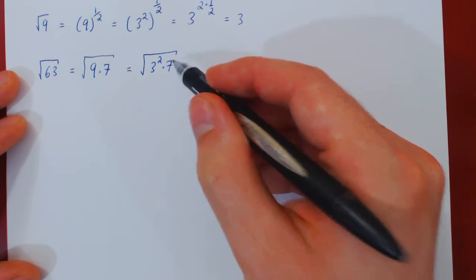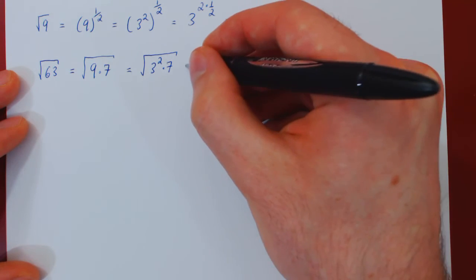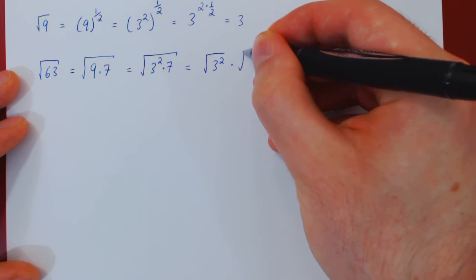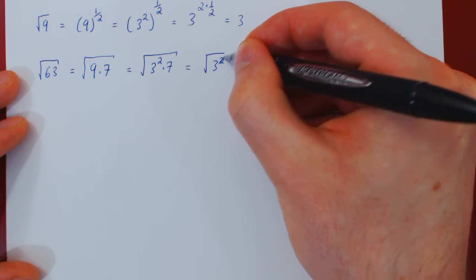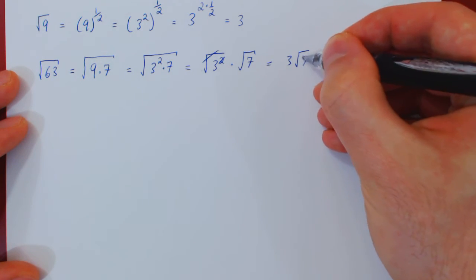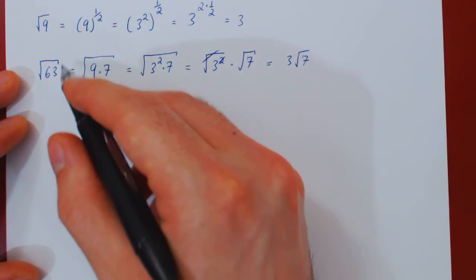7 is not a perfect square, but we know that we can distribute a square root on the product of terms. So this is the square root of 3 squared times the square root of 7. The root is the inverse function of the square, so they cancel, and so we're left with 3 times the root of 7. So 3 root of 7 equals root of 63.